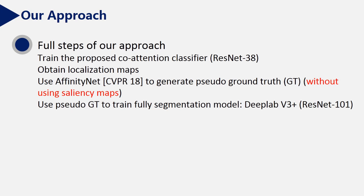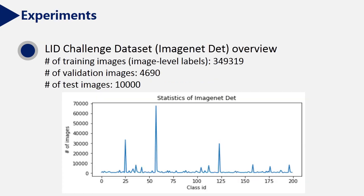The first step of our approach is shown here. First, we train the proposed co-attention classifier and then we obtain localization maps. Next, we use affinity maps to generate pseudo-ground truth without using saliency maps. Then we use pseudo-ground truth to train fully segmentation models.